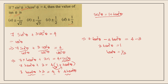Our question asks for tanθ. Taking the square root of tan²θ equals 1 by 3, we get tanθ equals plus or minus 1 by root 3. That is Option B, which is the correct answer.